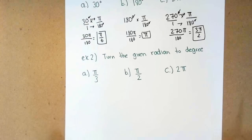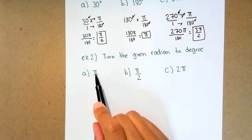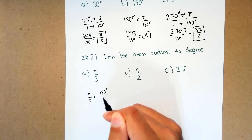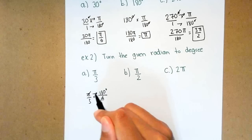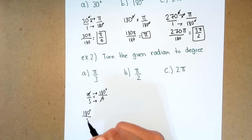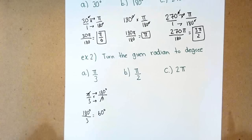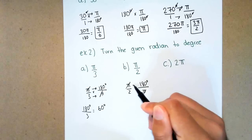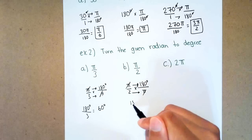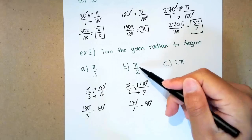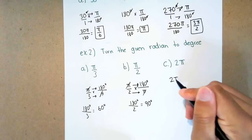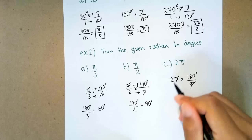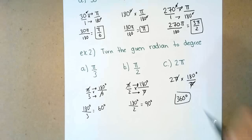So how do we go from radians to degrees? Same thing — you're going to multiply by either pi over 180 or 180 over pi. If you look at the examples, there's a pi in each one, so that pi needs to cancel out. The only way pi cancels is if pi is in the bottom, so multiply by 180 over pi. For pi over 3: multiply across to get 180 degrees over 3, which simplifies to 60 degrees. For pi over 2: that gives 180 over 2, which is 90 degrees. For 2 pi: 2 times 180 is 360 degrees.